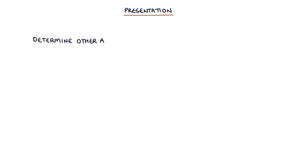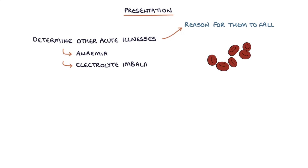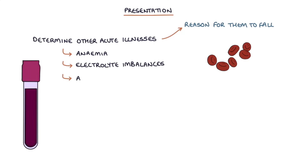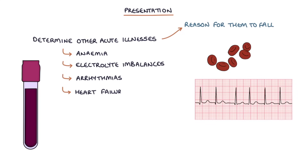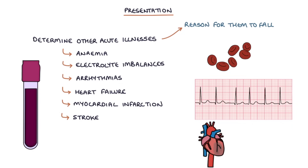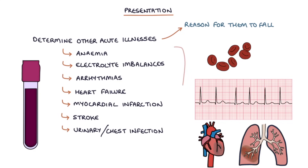An essential part of assessing patients with a new hip fracture is to determine any other acute illnesses. There's often a good reason for them to fall and break a hip — they may also be suffering from anaemia, electrolyte imbalances, arrhythmias, heart failure, a myocardial infarction, a stroke, or a urinary or chest infection. These conditions need to be identified as early as possible so the patient can be optimised and surgery can proceed with minimal delays.